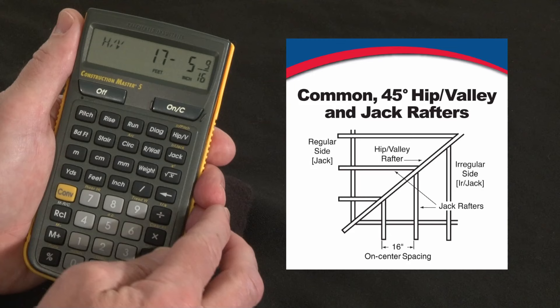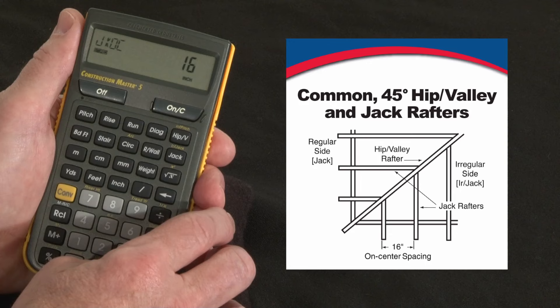Now if there were a 45-degree hip or valley coming off that, that would be 17 feet 5 and 9/16 inches long.